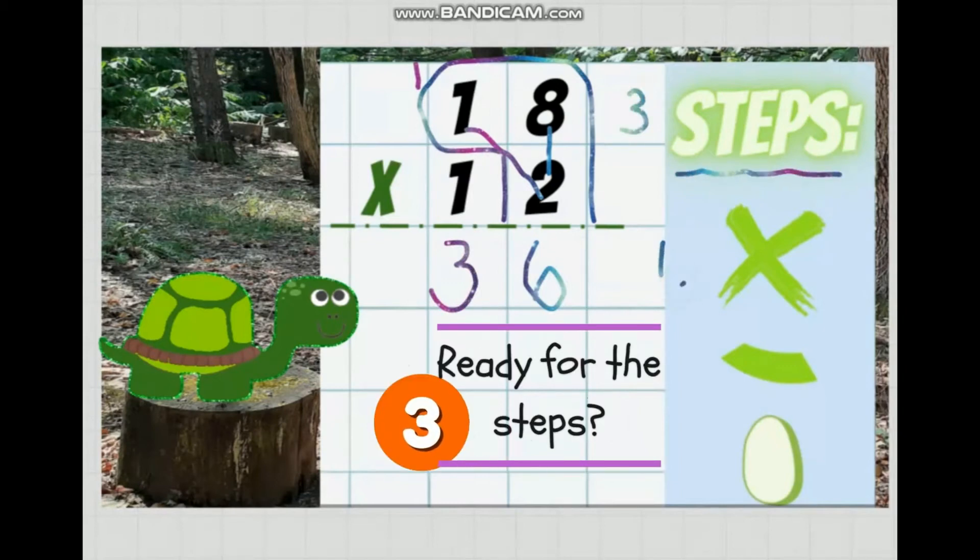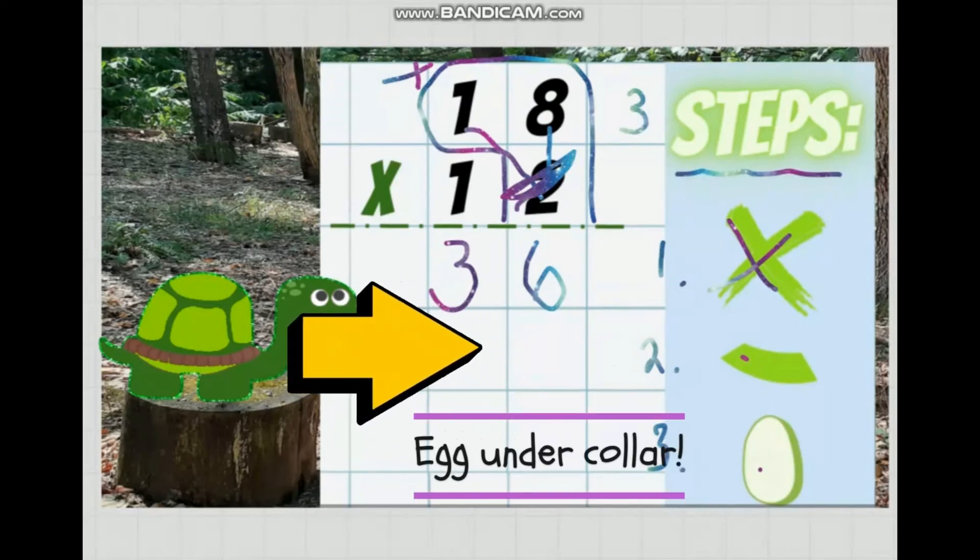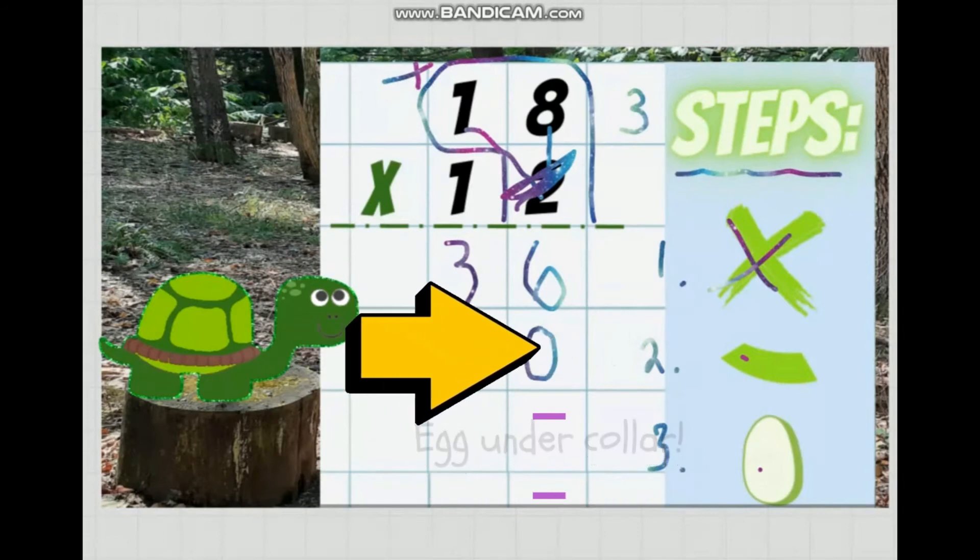Step time. Cross off carried number. Draw a collar. Drop an egg. It goes right under the collar in the ones place.